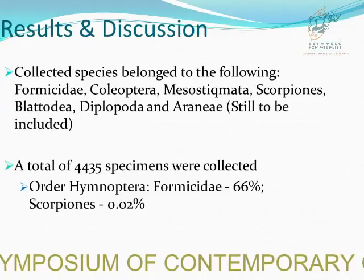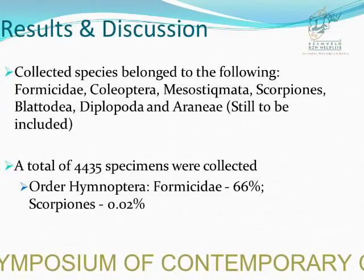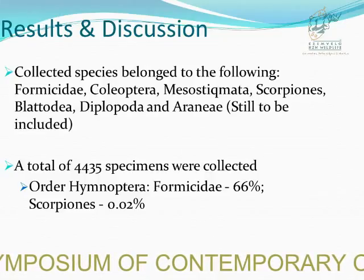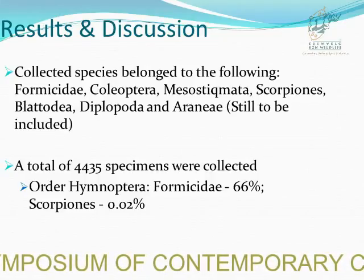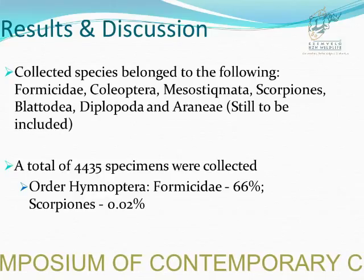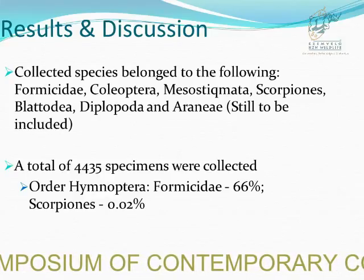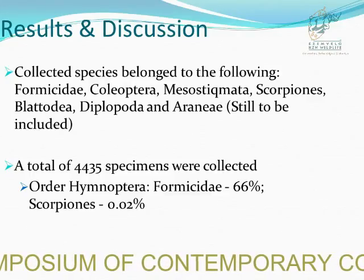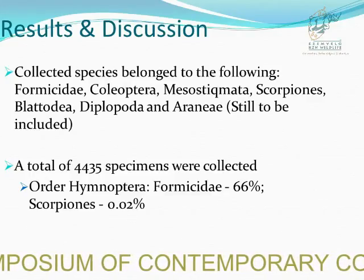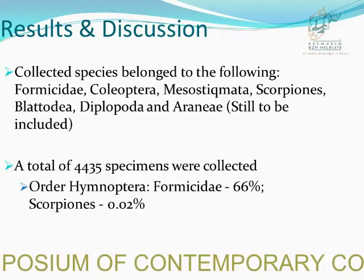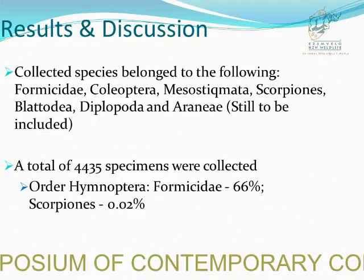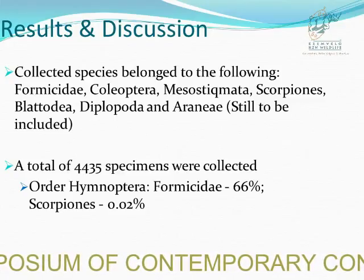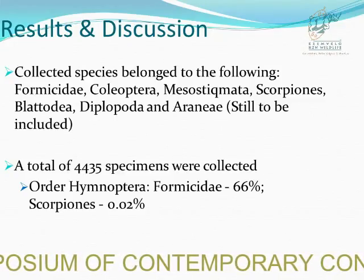The arthropods collected belonged to Family Formicidae, Order Coleoptera, Order Mesostigmata, Order Scorpiones, Order Phasmida, Blattoptera, and Order Araneae. We collected a total of 4,435 specimens. Order Hemiptera contributed the highest percentage of the total, while Scorpiones contributed the lowest.